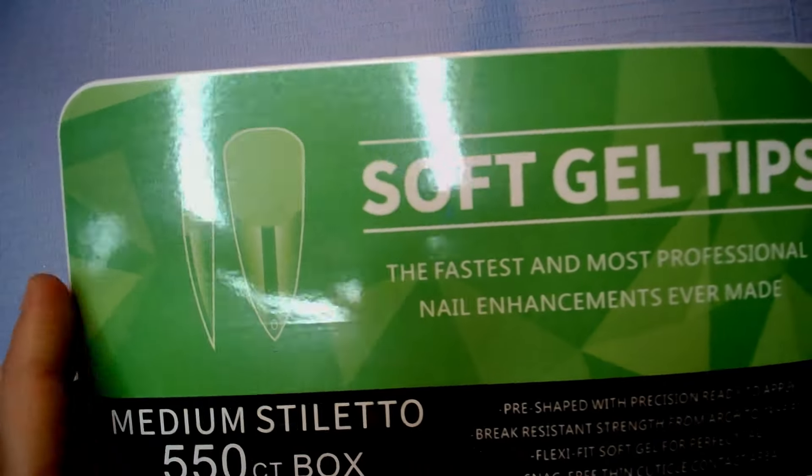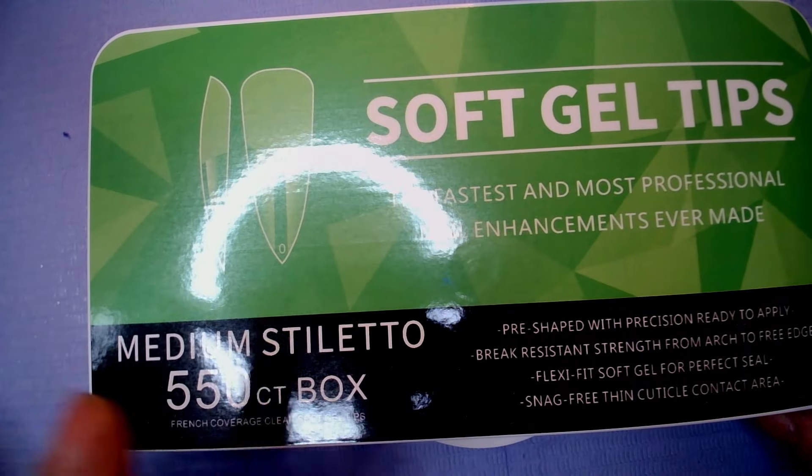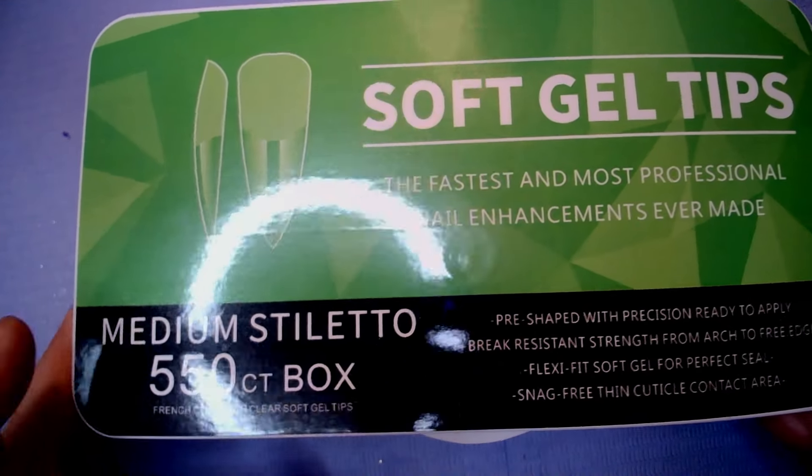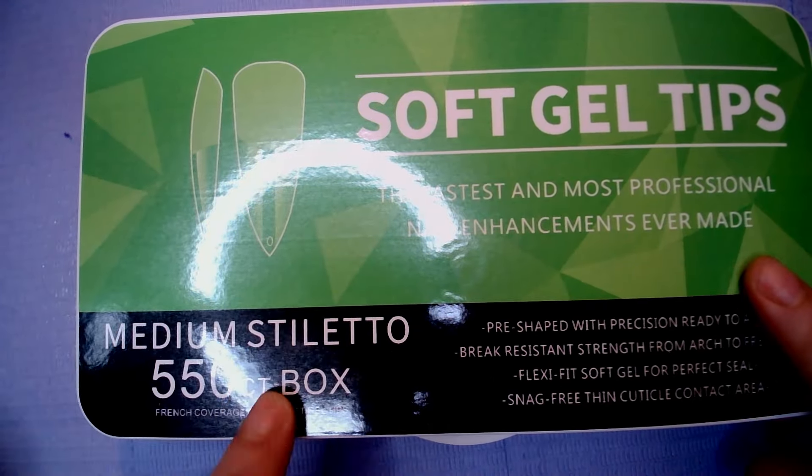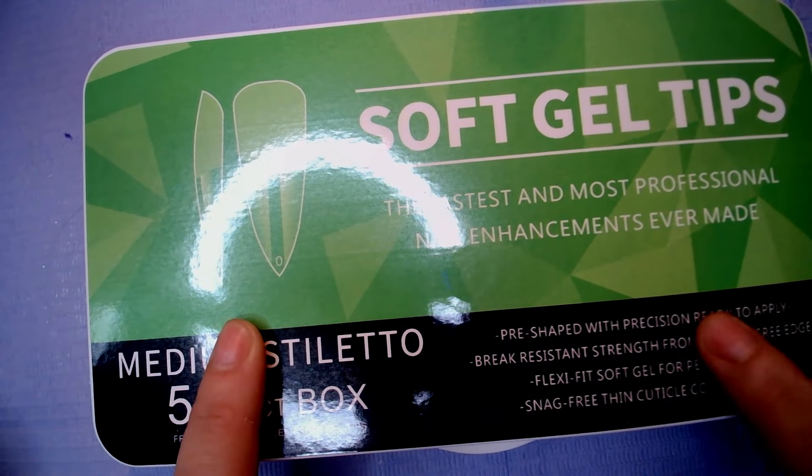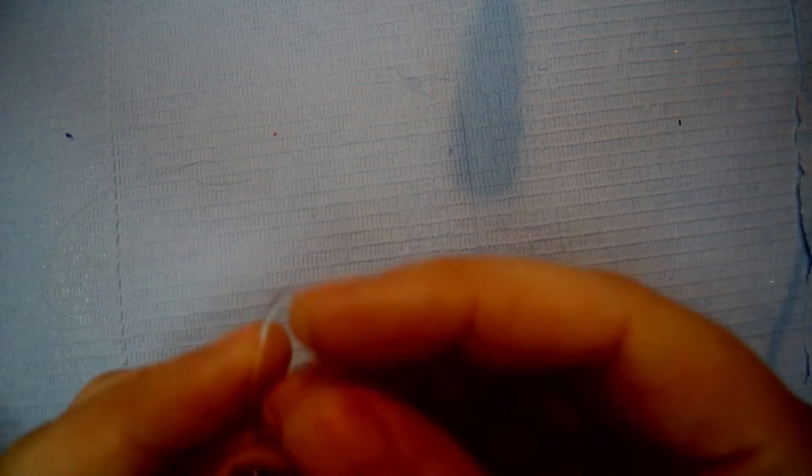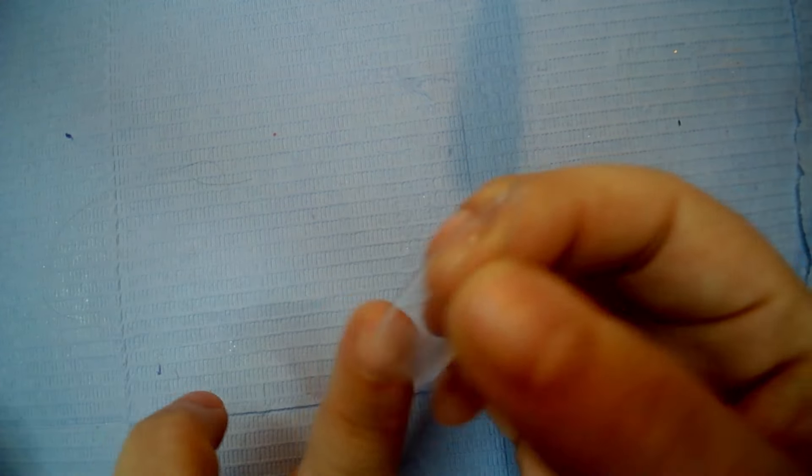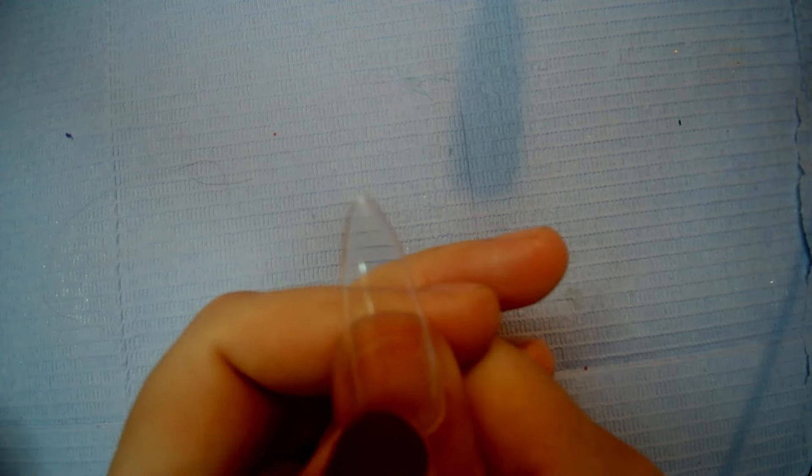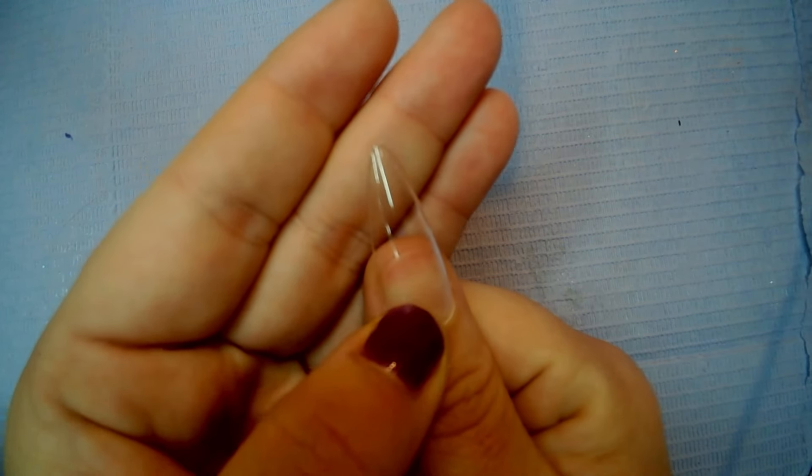So the first set I bought were these medium stiletto, 550 soft gel tips. Now for 550 tips, these were only £4.50 for a box. Open them up. And here we are. I forgot my thumb painted on that one. So you can sort of see the size of them on the medium.